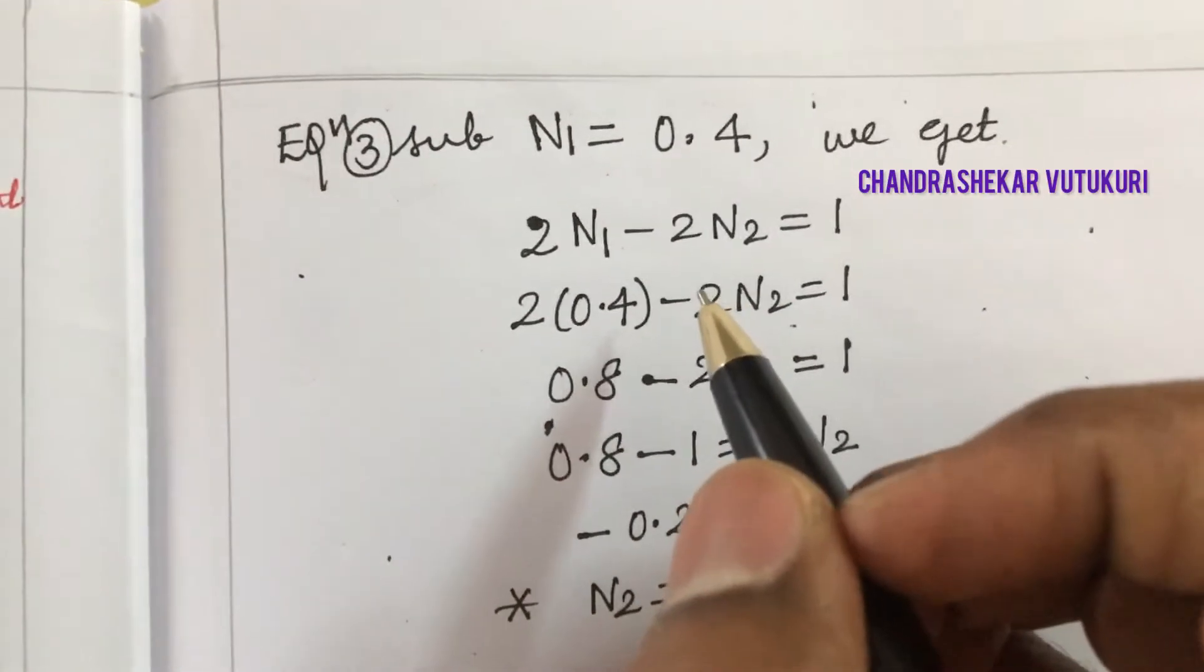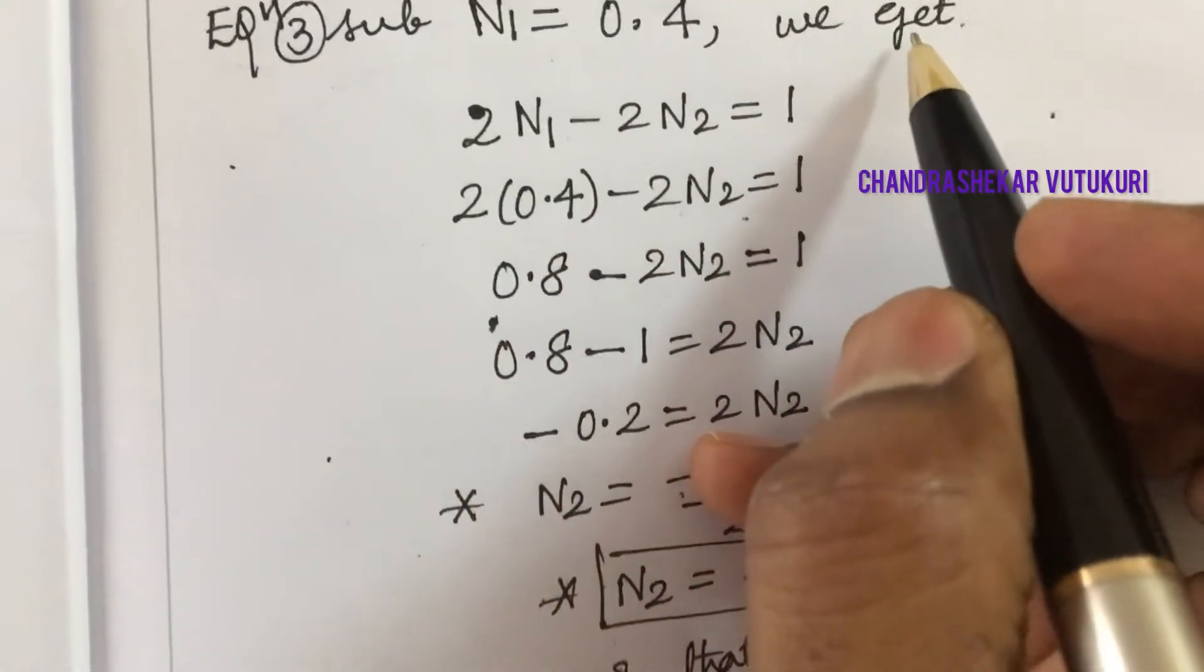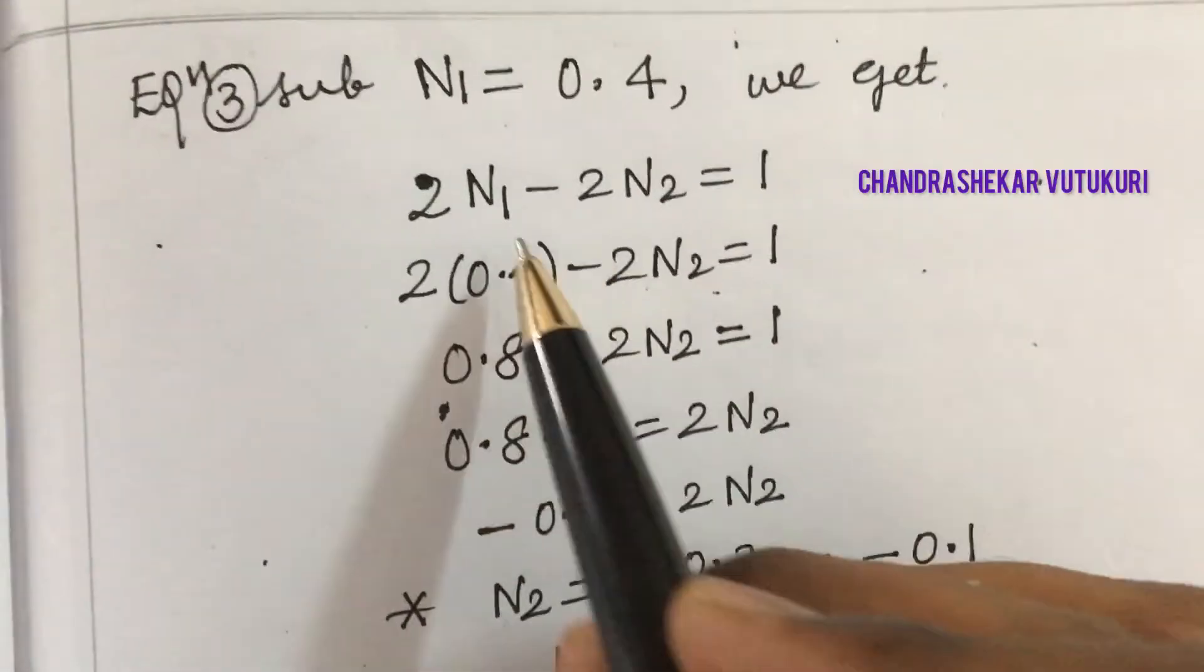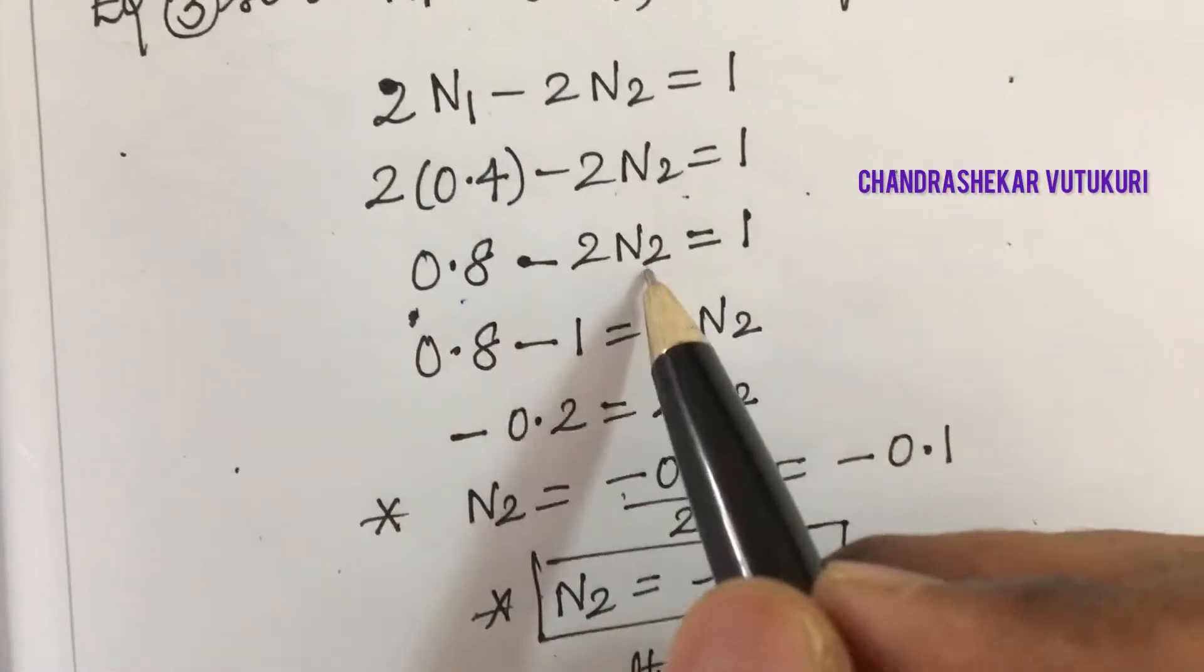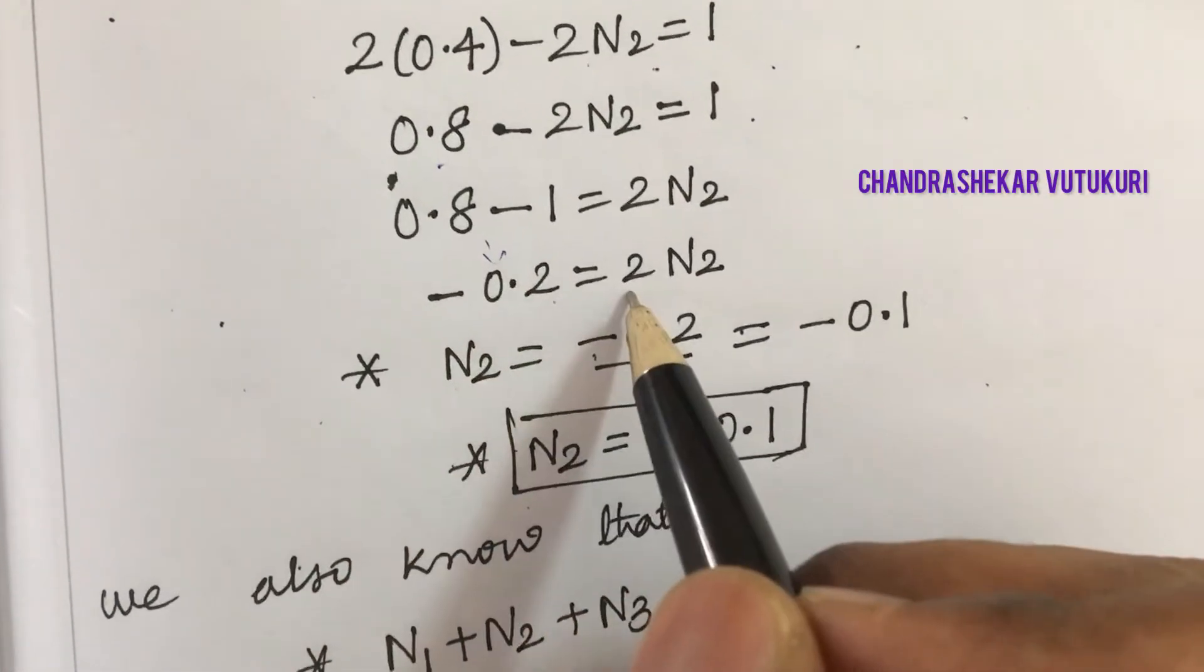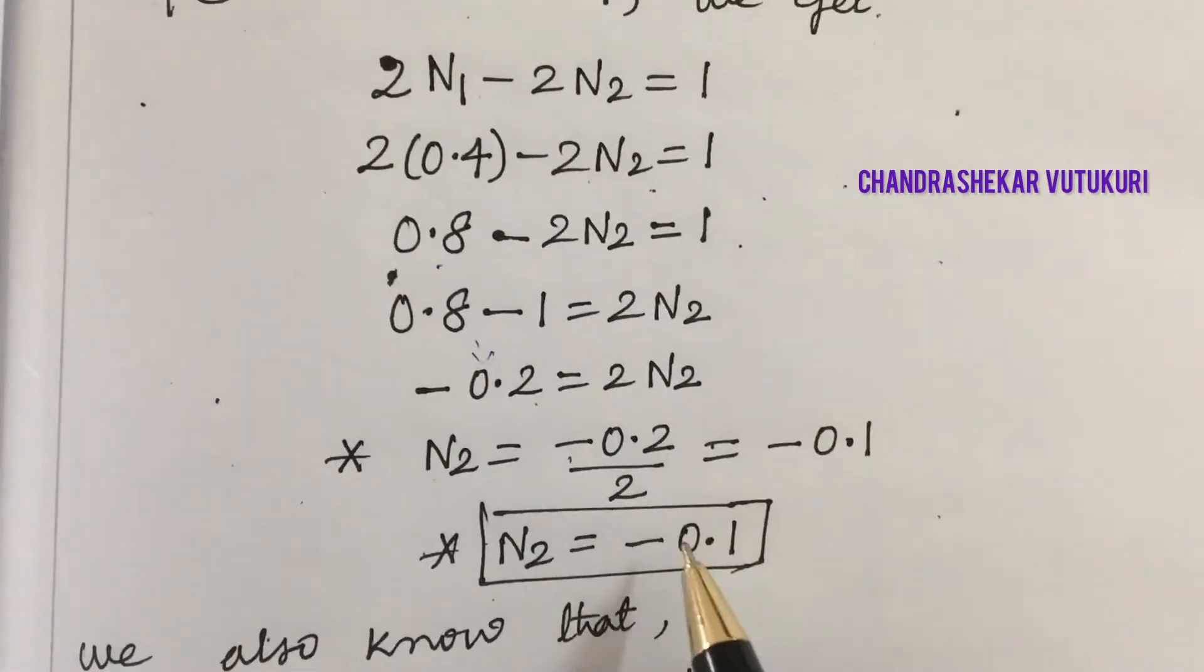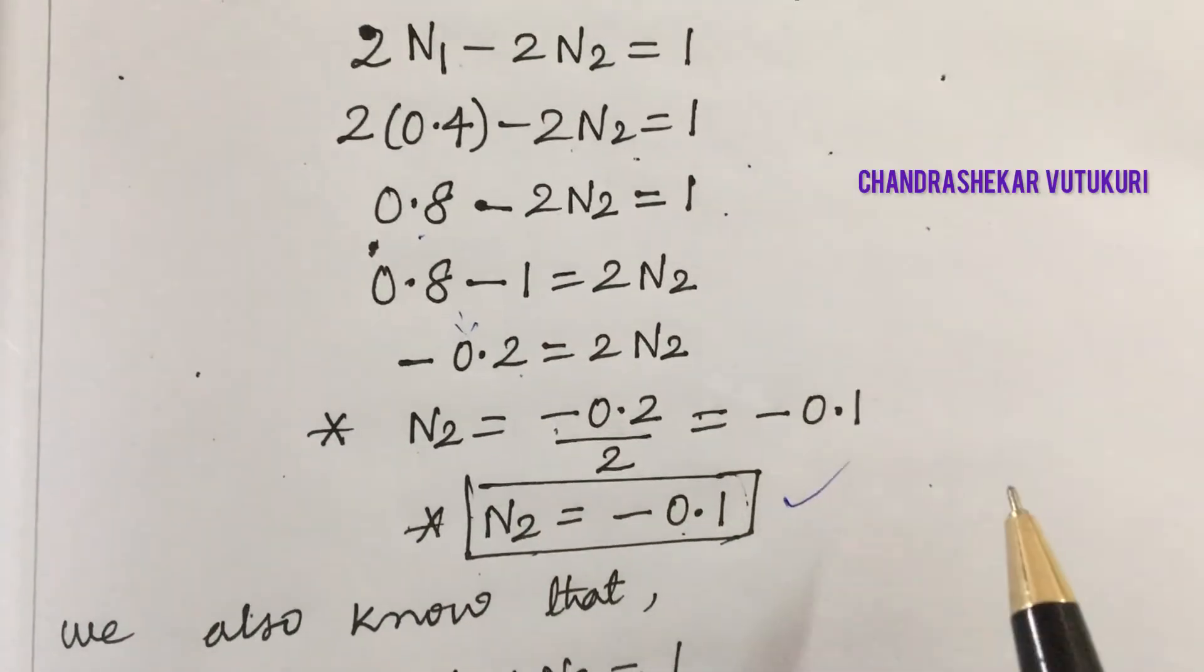Now in equation 3, let's substitute N1 equals 0.4. Equation 3 is 2N1 minus 2N2 equals 1. Substituting N1 as 0.4: 2(0.4) minus 2N2 equals 1. This gives 0.8 minus 2N2 equals 1, so 0.8 minus 1 equals 2N2. This becomes negative 0.2 equals 2N2. Therefore N2 is negative 0.1.